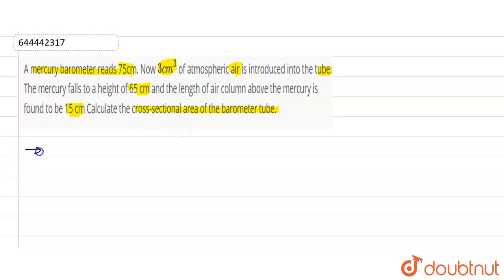Let us write the parameters. The initial volume of the air is given to us, which is 3 cubic centimeters, and the pressure at which it is 75 centimeters.